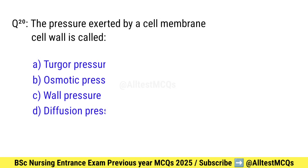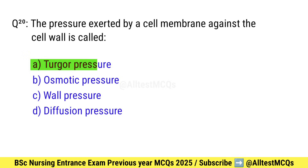Question number 20. The pressure exerted by a cell membrane against the cell wall is called what? Right option is A: Turgor pressure.